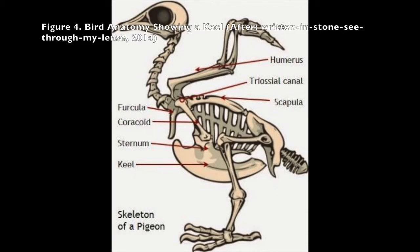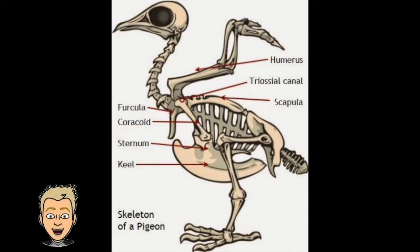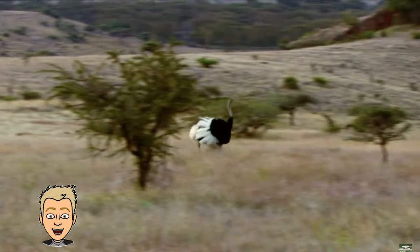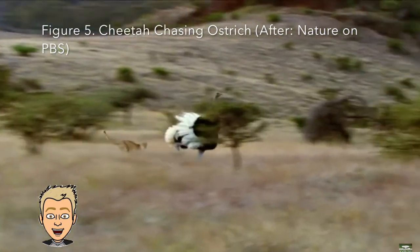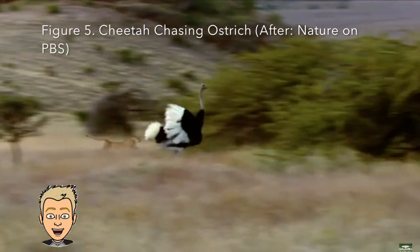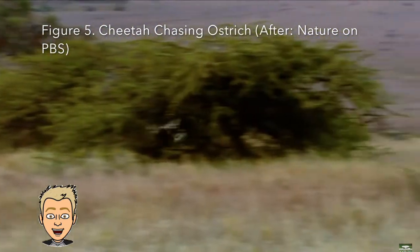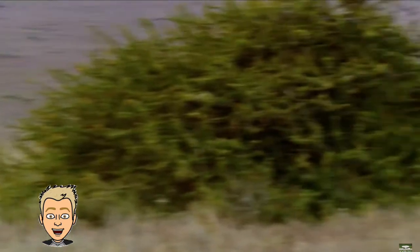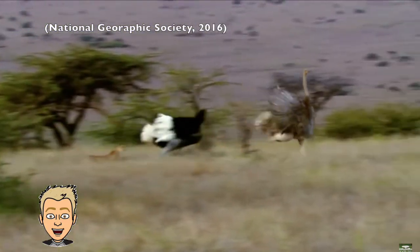Ratites are recognised by the lack of a keel on their sternum, thus lacking a stable skeletal anchor for flight muscles. Ratites also have heavy, solid bones able to anchor large leg muscles adapted for running, allowing ostriches to reach speeds of 40mph.